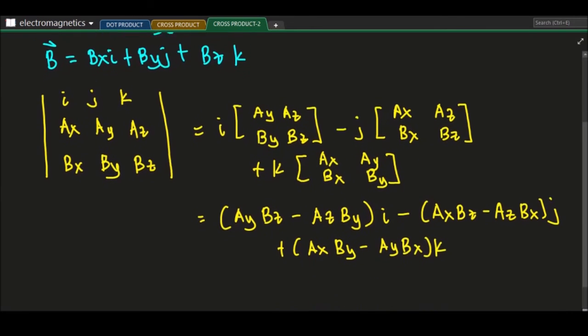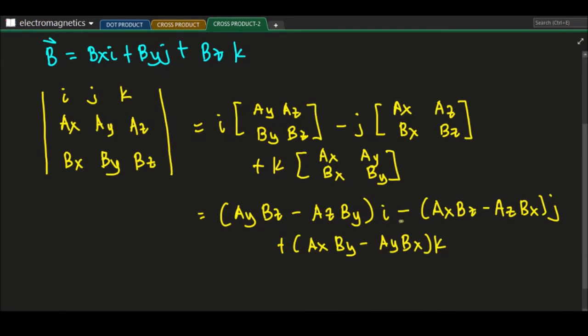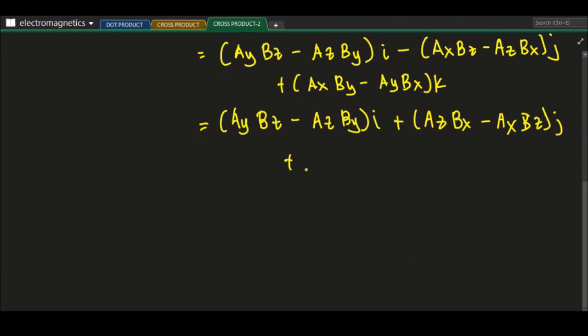So we have now that one. We just transfer our sign. Just make this one as positive, so we put our negative inside. We just multiply this term by negative one. So we have A y B z minus A z B y i plus. So this would be positive. So that is A z B x minus A x B z j plus A x B y minus A y B x k.